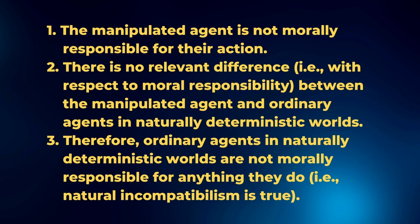So usually when someone gives a version of the manipulation argument against compatibilism, they start with a case of manipulation and then try to argue from the manipulated agent's non-responsibility to incompatibilism as the conclusion. So you give a case where an agent is manipulated into doing something, and then the first premise based on this case is that the manipulated agent is not morally responsible for their action.